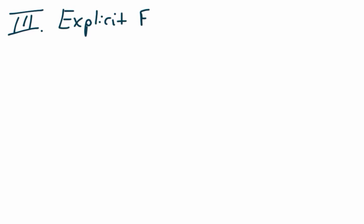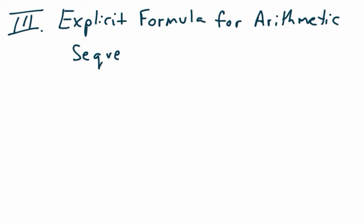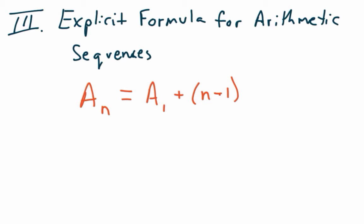Roman numeral three: explicit formulas. A little bit later you'll get a different type called a recursive formula, but this is the explicit one — it's the more powerful one, though a little tougher to work with. This is worth memorizing. The formula is: A sub N equals A sub 1, plus (N minus 1) times D, where A sub 1 is the first term and D is the common difference — what you're adding each time to get from one number to the next.